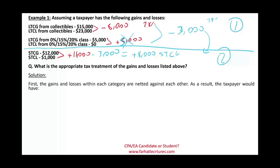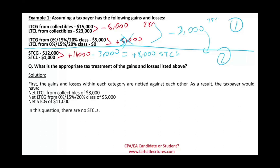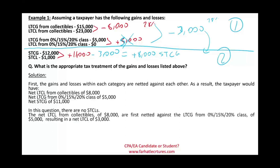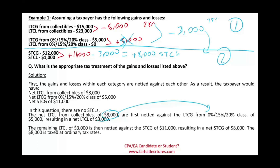So the gains and losses within each category are netted out — the 28% loss of $8,000 is first netted against the $5,000 gain, leaving negative $3,000. Then the remaining $3,000 is netted against the $11,000 short-term gain, leaving $8,000. That $8,000 is taxed at the ordinary tax rate since it's short-term — whatever your regular income tax rate is.